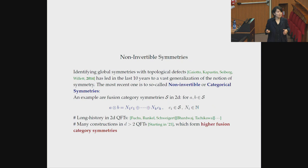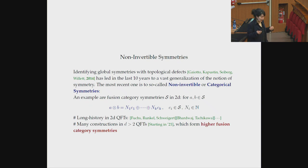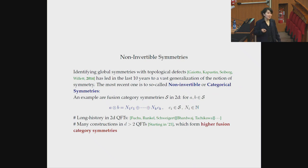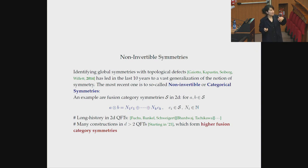In the last 10 years, we've generalized the concept of global symmetries in physics, starting with the seminal paper by Gaiotto, Kapustin, Seiberg, and Witten in 2014. The idea is that topological defects in physics should be identified with symmetries, and the most recent generalization is to the so-called non-invertible, or categorical, symmetries. The simplest examples are really these fusion category symmetries, and most of my talk will be about fusion categories.